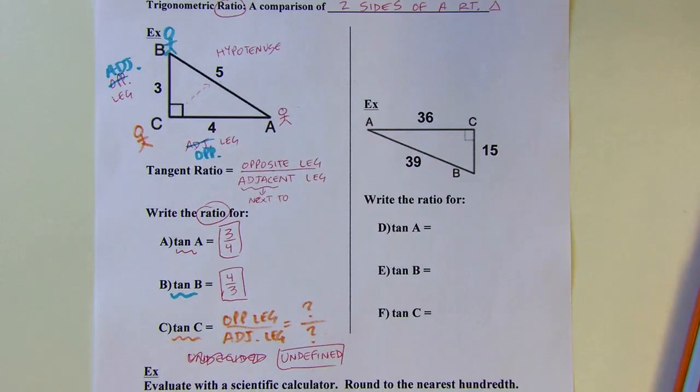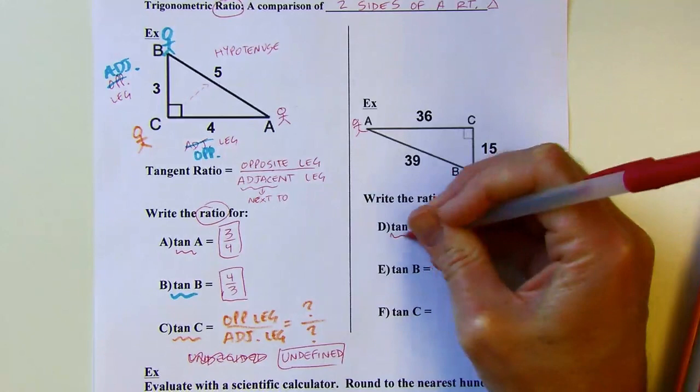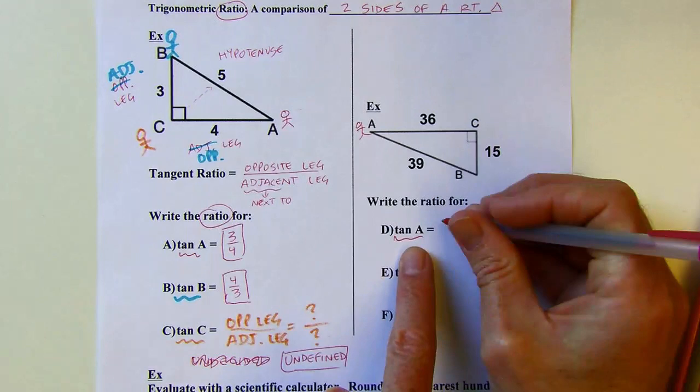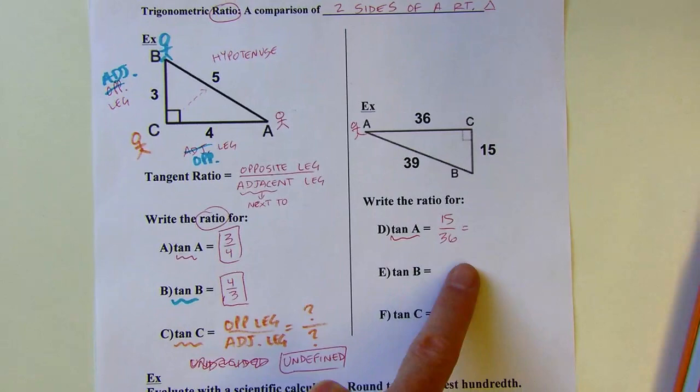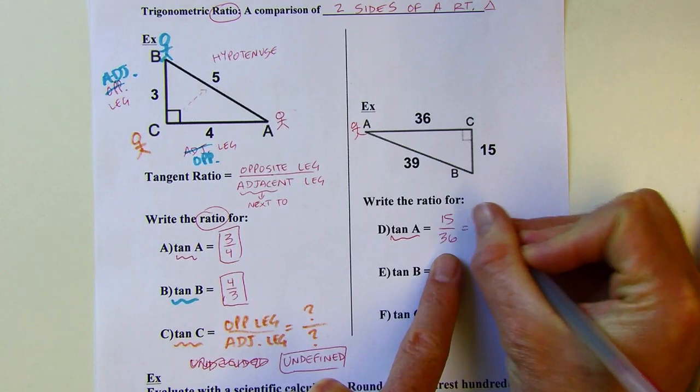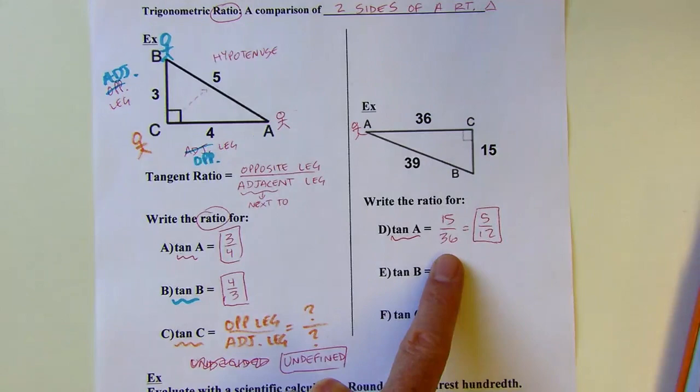Let's try this one — same kind of problem. I'm at A, so I'm thinking opposite over adjacent. Opposite would be 15 and adjacent would be 36. I can reduce this: 3 goes into both of those. 15 divided by 3 is 5, 36 divided by 3 is 12, and I can't reduce that any further. So five-twelfths — not 15 over 36, even though they're equivalent. I want the reduced version.